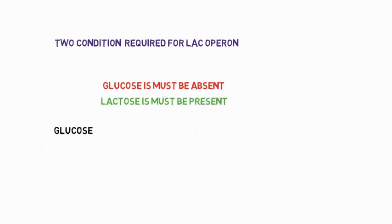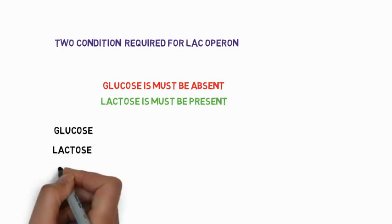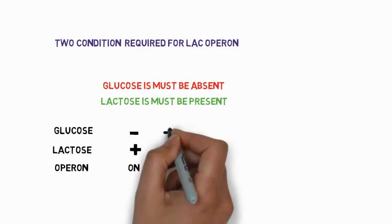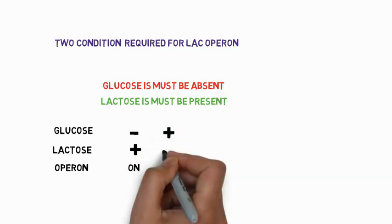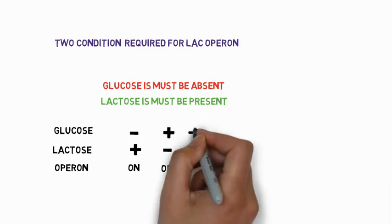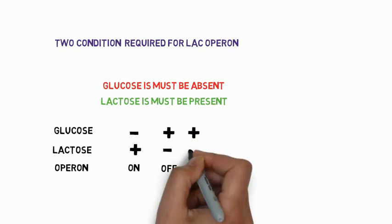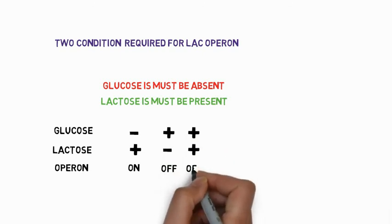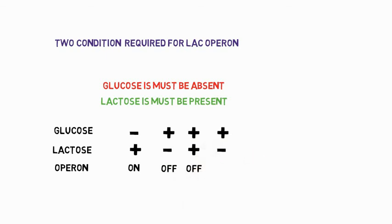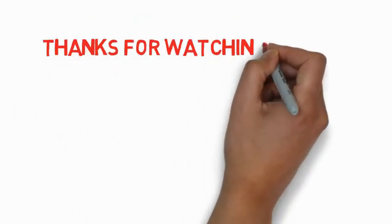Now for the lac operon there is glucose and lactose level and the operon effect. If glucose is not present and lactose is present then operon is turned on. But if glucose is present and lactose is absent, then it will also turn off. Now if glucose is present and lactose is present then lac operon is turned off. If glucose is present and lactose is absent then lac operon is turned off.